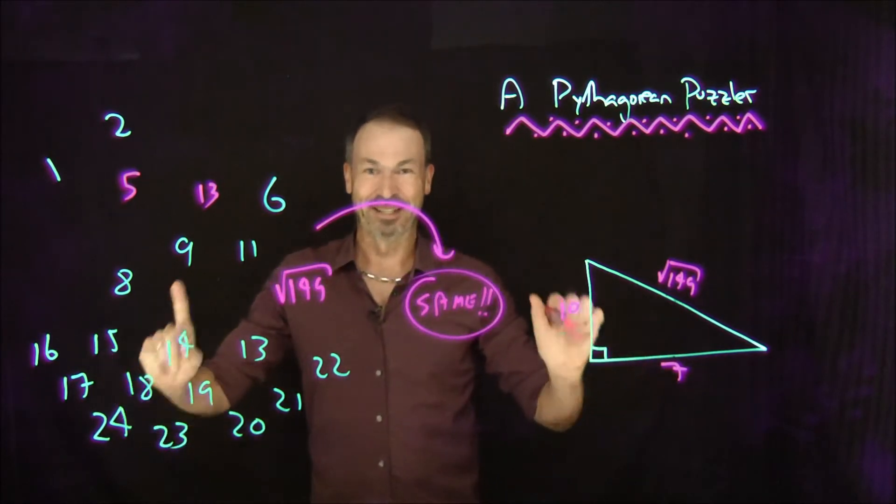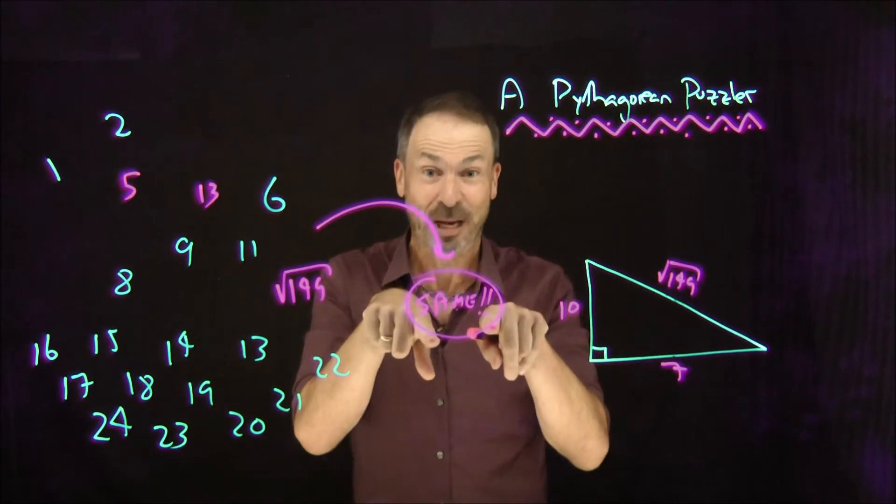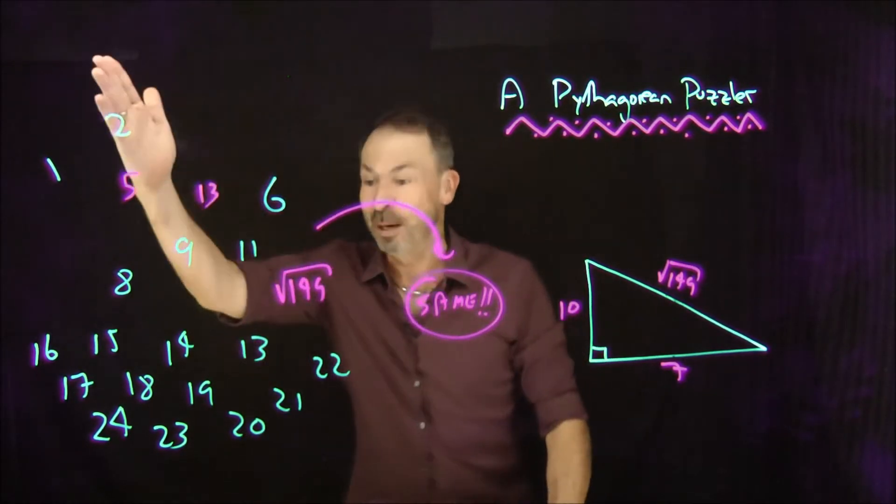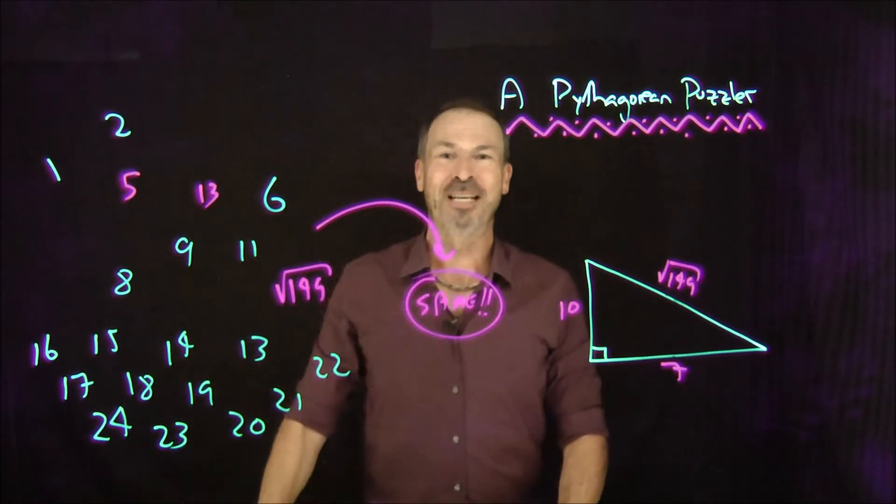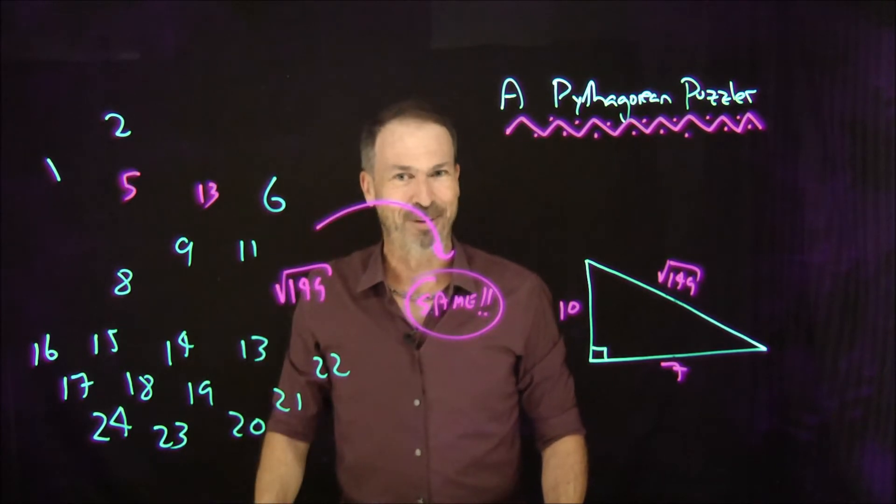So my question is twofold. What is that same one number you're sure to get every single time, and why are you sure to get it every single time? Why is this independent of the choices you make along the way? Why are you guaranteed of a particular number at the end? So what is that number, and why must it be that number?